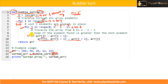For the first inner iteration j is 0. We check if the element at position 0 is greater than the element at position 1. Position 0 is 64, position 1 is 34 — 64 is greater than 34, so this condition is true and we swap these elements.